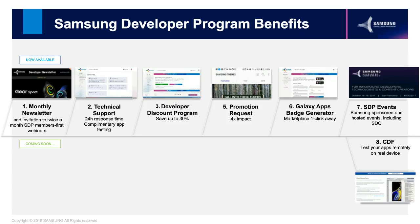We also have a developer discount program where we offer devices at a discounted rate for Samsung Developer Program members. The percentage of the discount and device availability varies from time to time, so keep an eye on it. You can also submit a promotion request. If you submit a promotion request, we will highlight your application with a banner on the main page of the Galaxy App Store, which increases downloads four times. So if you need visibility for your application, please submit a promotion request.